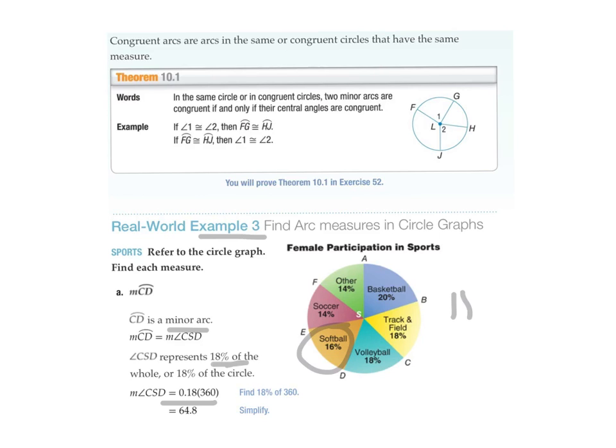If not, 18 percent is don't forget the same as 18 over 100 and then multiply it by 360 over one. Whichever way is simplest for you is the way you need to go.